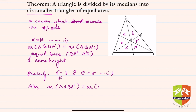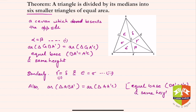Also, the area of triangle ABA' is equal to the area of triangle AA'C. Again, equal base: BA' equals A'C, and the same height.